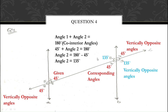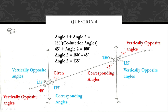Now angle 6: skipping angle 7, we find angle 6 on the same side of the transversal. Angle 3 and angle 6 are corresponding angles, so angle 6 = 135°. Then angle 5 = 135° because angles 6 and 5 are vertically opposite angles. So using just one given angle of 45°, we found all missing angles.